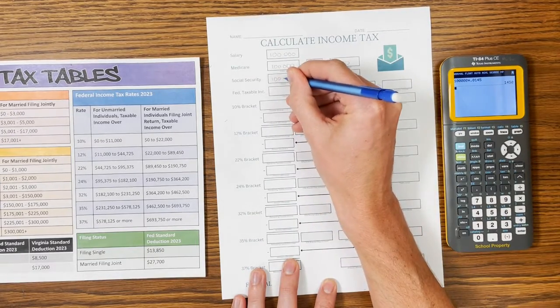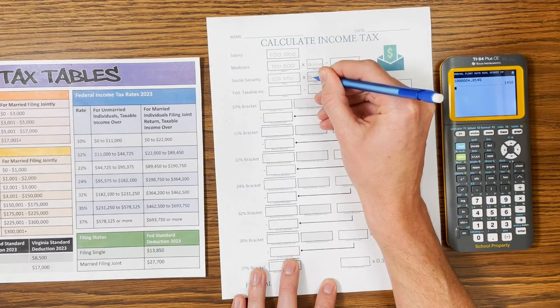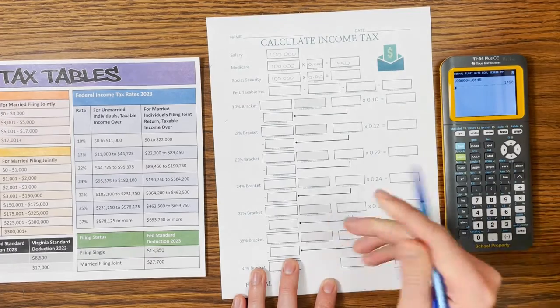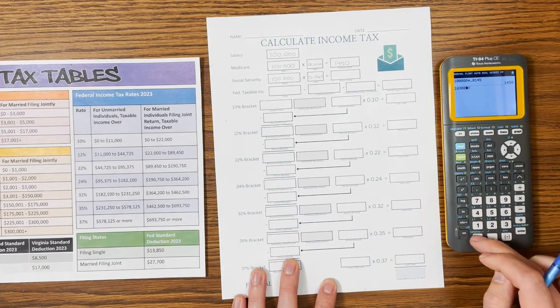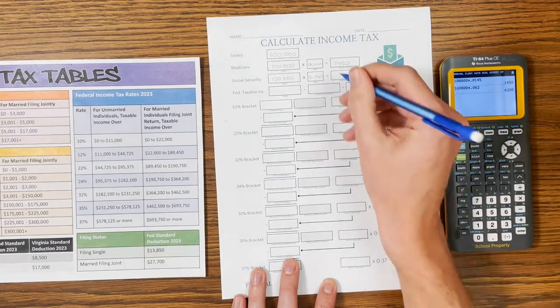Social Security goes back to the same salary, and this one is at 6.2%, so 0.062. Don't forget that zero. And so $100,000 times 0.062, we get $6,200.